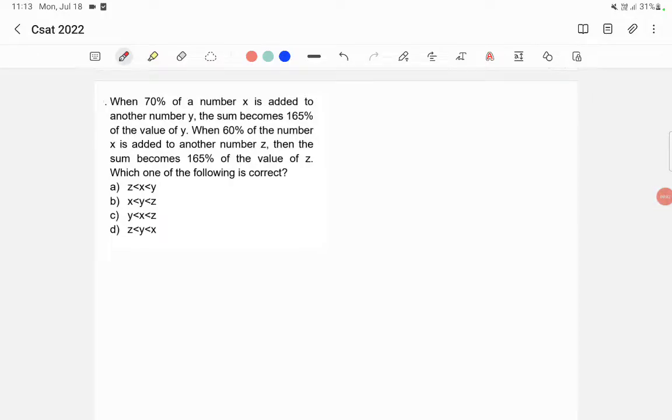When 70% of a number x is added to another number y, the sum becomes 165% of the value of y. When 60% of the number x is added to another number z, then the sum becomes 165% of the value of z. Which one of the following is correct?